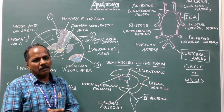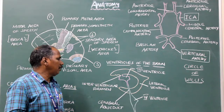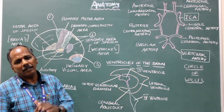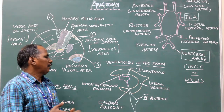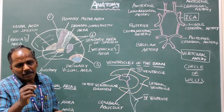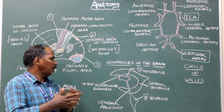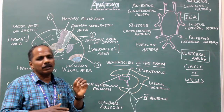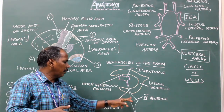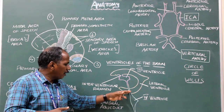Interventricular foramen. It is the foramen which connects the lateral ventricle to the third ventricle. Third ventricle: it is the cavity present between the two thalami. It is connected to the fourth ventricle by cerebral aqueduct.